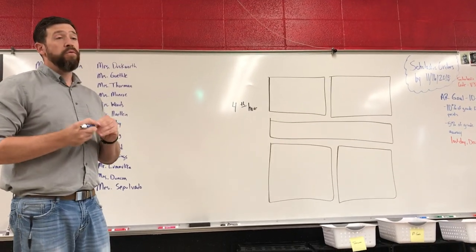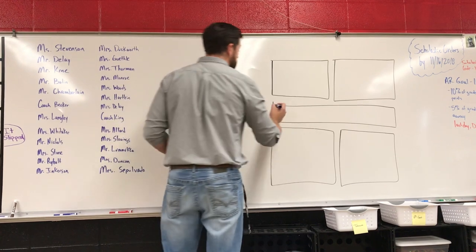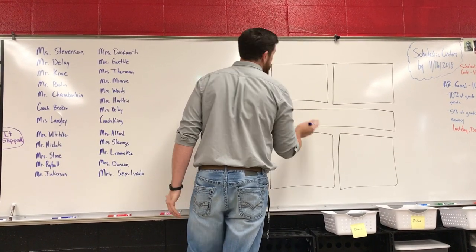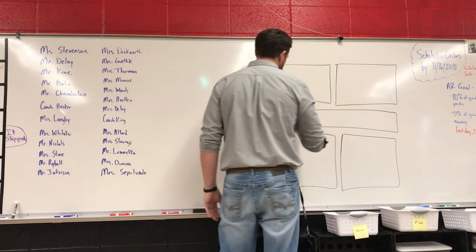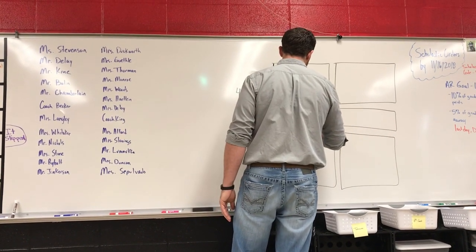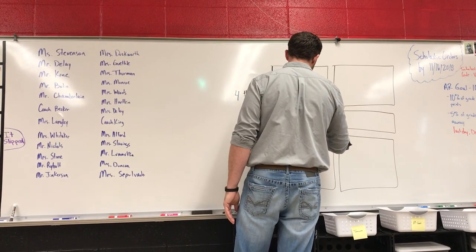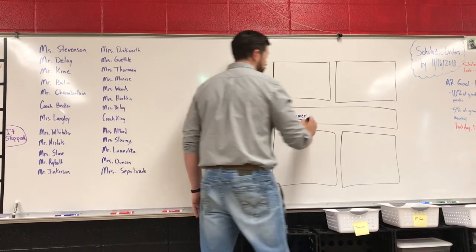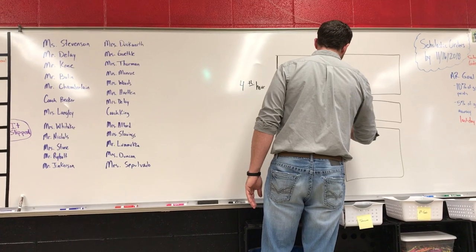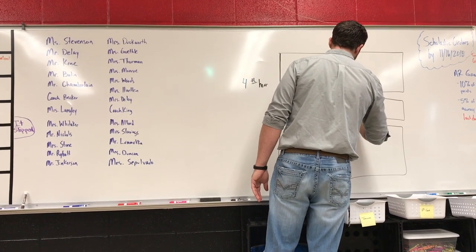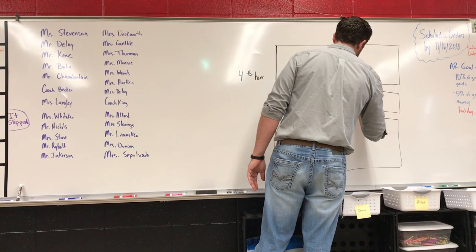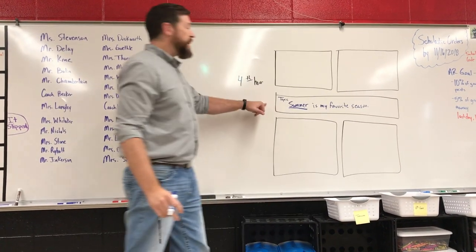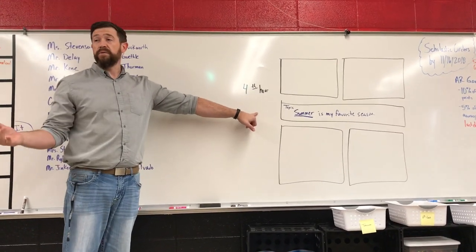What we're going to do today is called a four-square. The first thing we're going to do is our topic. You guys already said your favorite season was summer. So we write down summer and underline it, because that is our topic. Summer is my favorite season. That's our topic sentence — that's what our paper is going to be about.